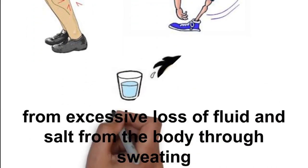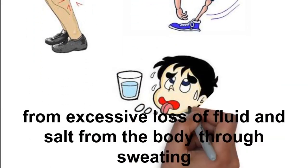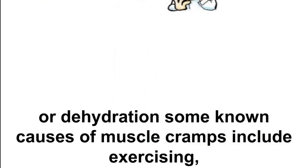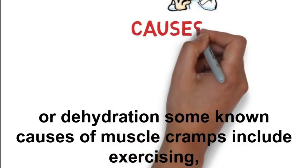Cramps occur due to buildup of a chemical waste product in the muscle, or from excessive loss of fluids and salt from the body through sweating or dehydration.